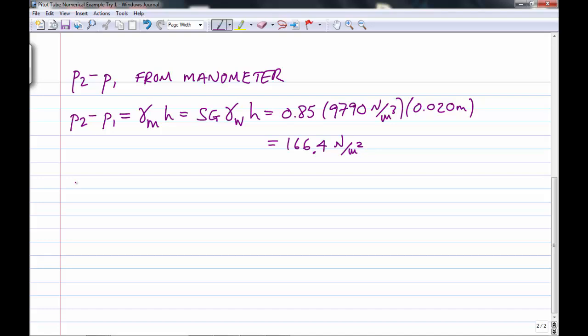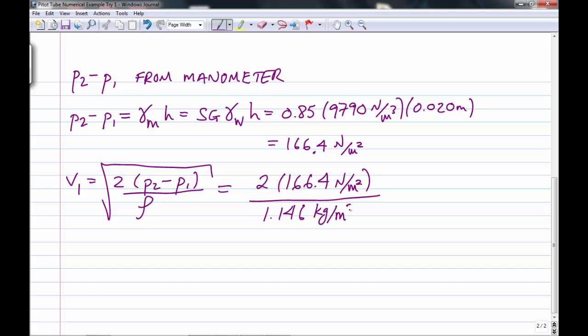So now we can make our substitution. Remember we had that v1 equals 2 p2 minus p1 over the rho of air square rooted. So we can take 2 times 166.4 newtons per meter squared over the density of air which we calculated to be 1.146 kilograms per cubic meter. And you should always check, right,